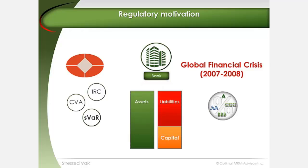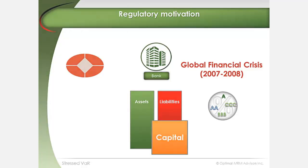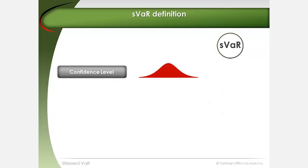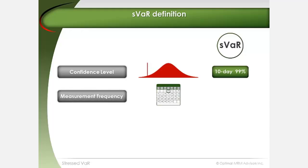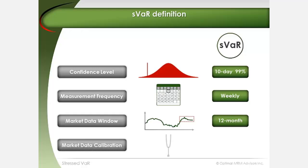The intent of these additional exposure measurement requirements was to raise the amount of capital that banks were required to hold going forward. The general guidelines provided are that the stressed VAR measure should be based on a 10-day holding period at a 99% confidence level and calculated at least weekly. Model risk factor inputs are to be derived from historical data over a continuous 12-month period of significant financial stress as relevant to the bank's portfolio, and risk factors under stressed market conditions are to be calibrated at least once a year.